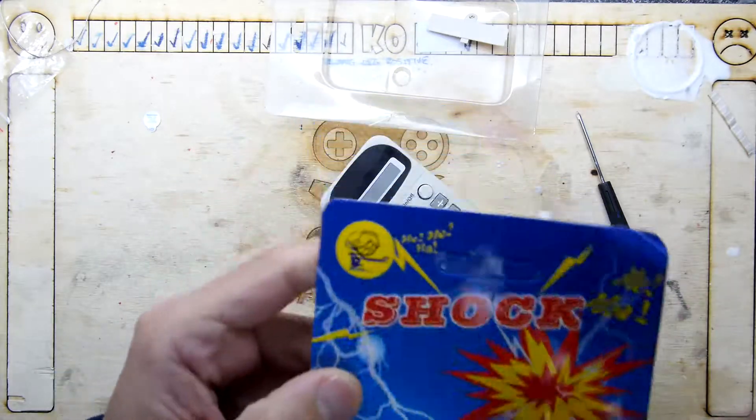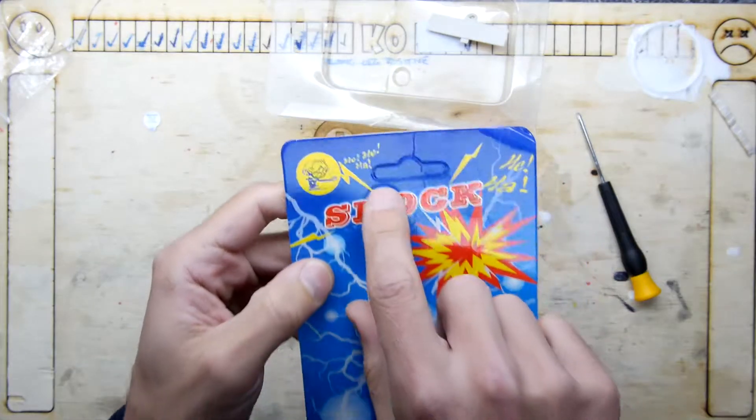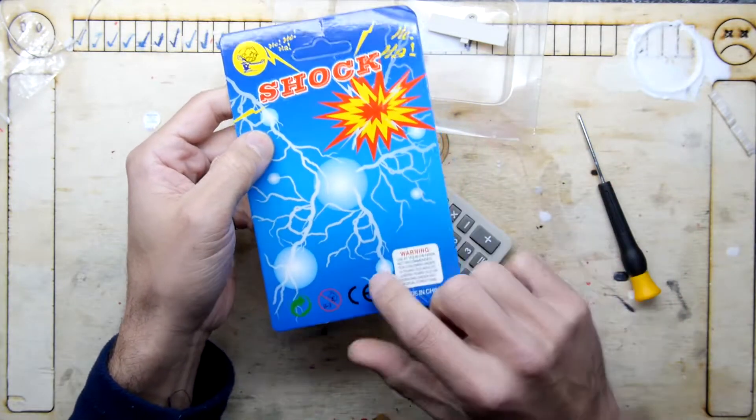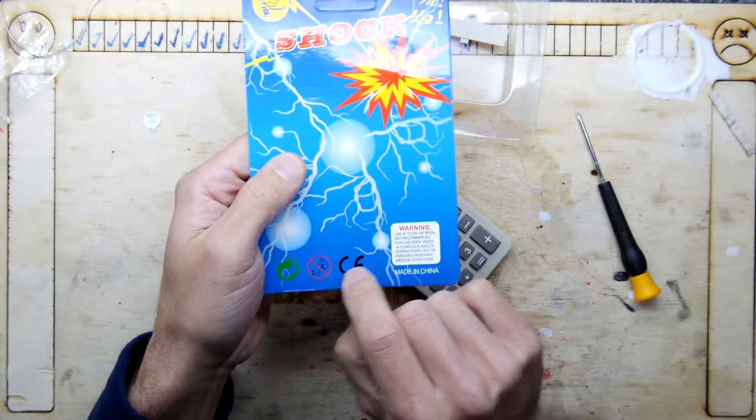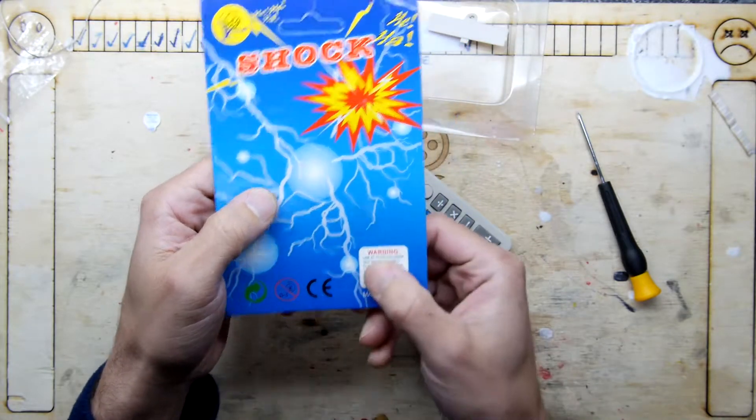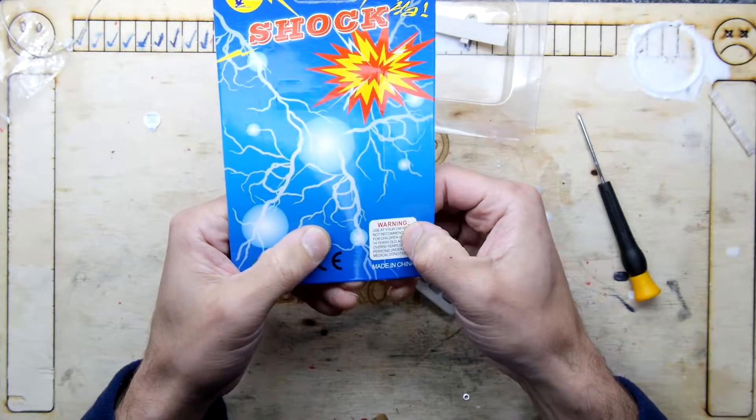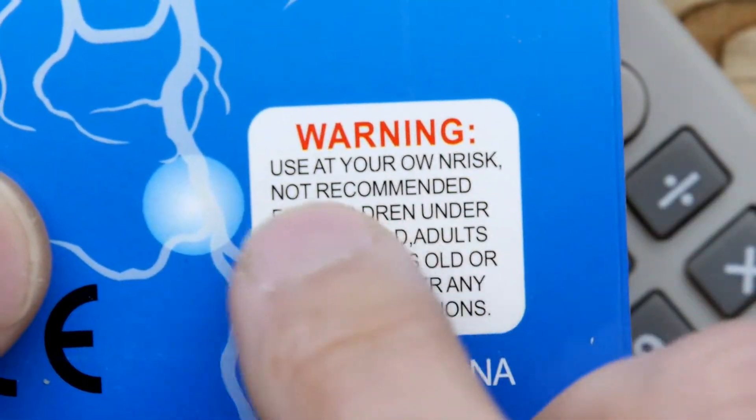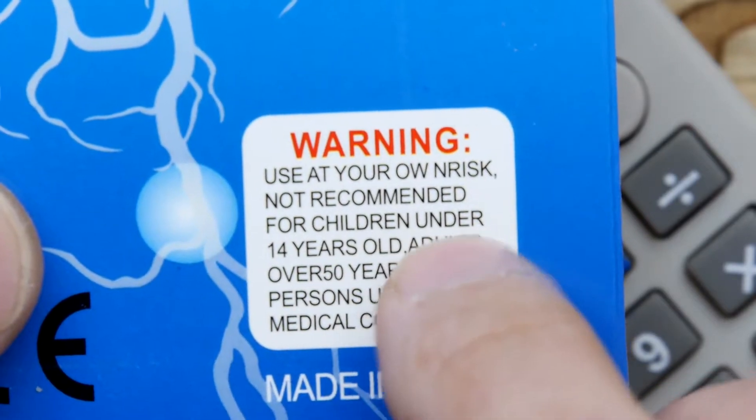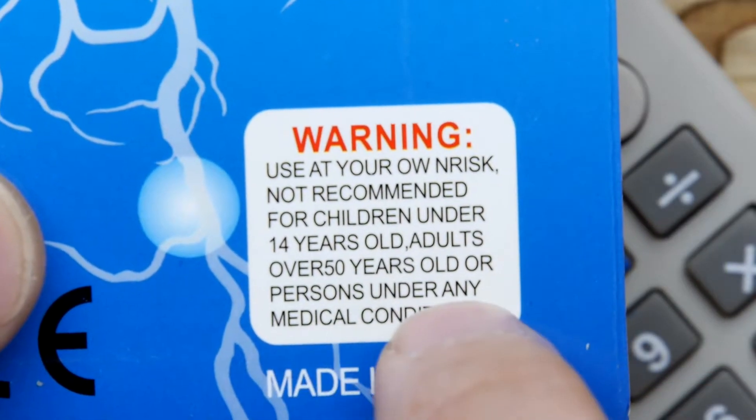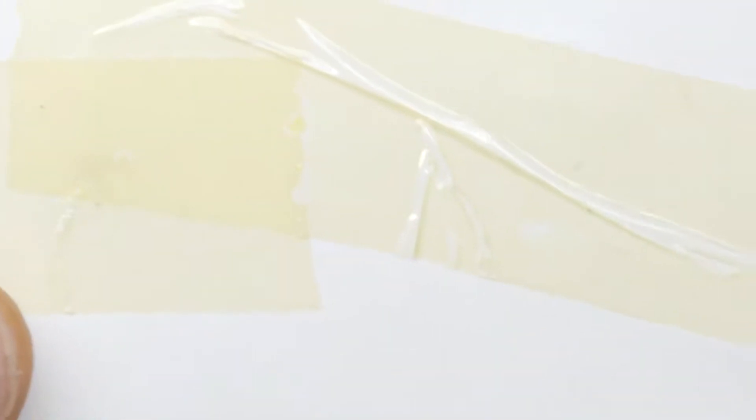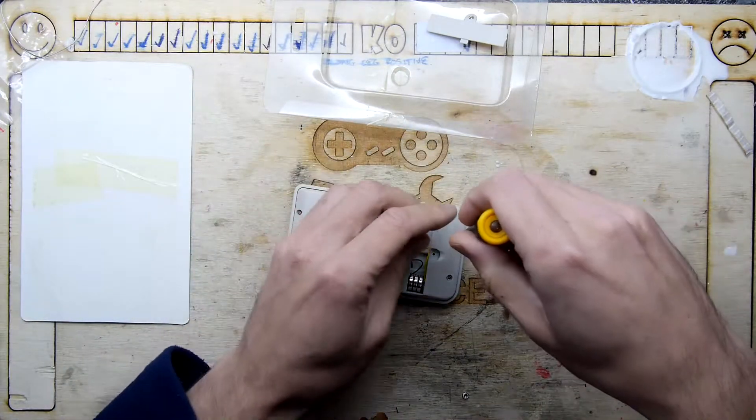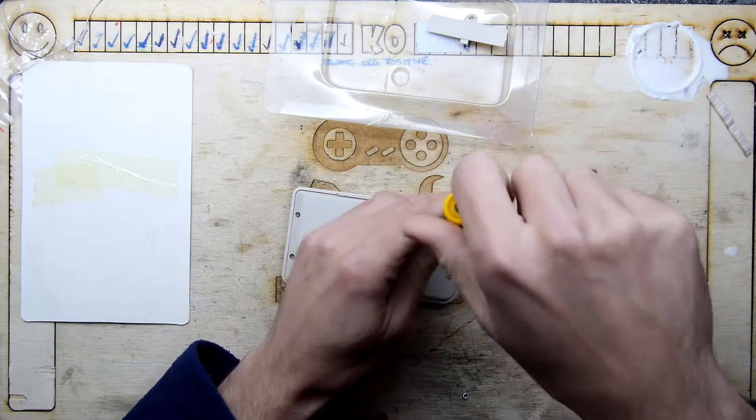It's got this angry guy here who's looking very angry. Shock, explosion, lightning bolts, sad onion, zero to three, China export logo, recycle. But the warning's interesting: use at your o-risk. It does say o-risk, o-ne-risk. Not recommended for children under 14 years old, adults over 40 years old, or persons under any medical conditions. On the back there's just nothing. Unfortunately I don't qualify for any of those things, so I was the target for this device.